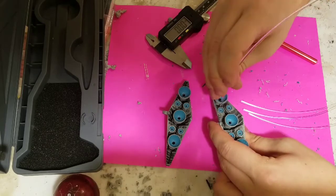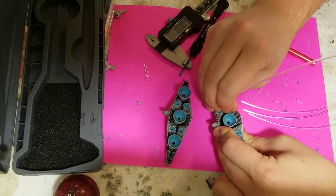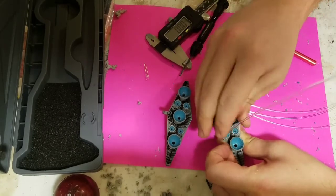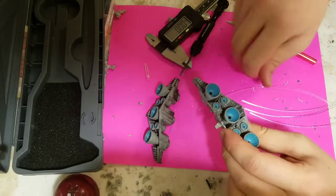Now we're going to use the 2mm fiber optic to test fit it and ensure that it fits through. If it doesn't, use the drill bit to expand the hole slightly, either by drilling or by working it up and down.